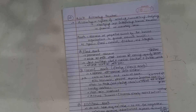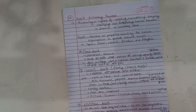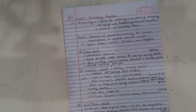Accounting is the system of collecting, summarizing, analyzing, classifying, and interpreting business transactions in financial or monetary terms. So you can collect, summarize, analyze, and interpret business activity in terms of accounting.